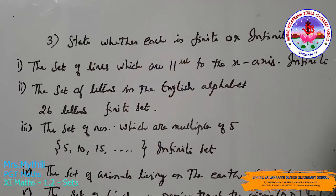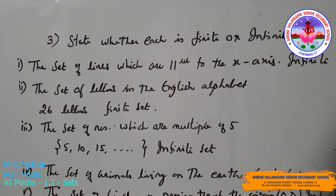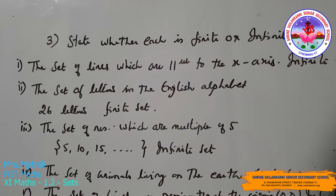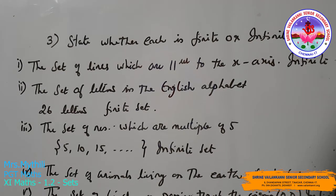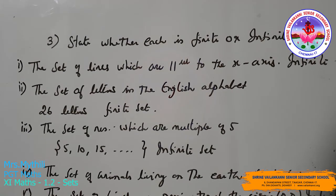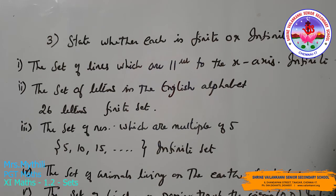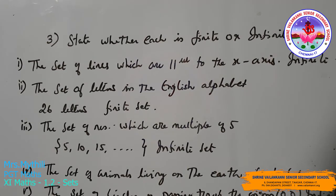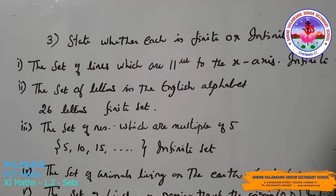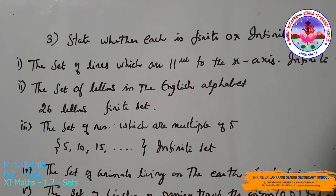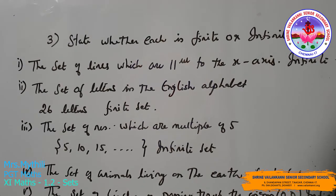Third: the set of numbers which are multiples of 5. Multiples of 5 are 5, 10, 15, 20, and so on — infinite elements, so it is an infinite set. Fourth: the set of animals living on the earth is a finite set because the number of animals is very large but finite. Fifth: the set of circles passing through the origin (0, 0). We can draw infinite circles through the origin with different radii, so it is an infinite set.